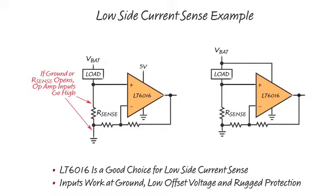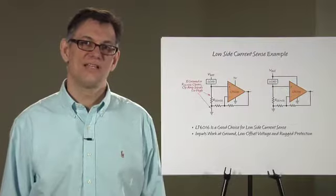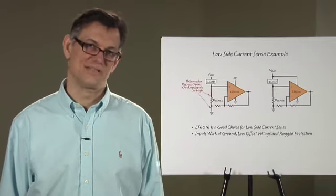The first application example is low side current sensing. This is when you place a small sense resistor between the load and ground and use an op amp to amplify the voltage across the sense resistor, which is proportional to the current that flows through the load. Because the LT6016 op amp inputs operate down to ground with good accuracy and low noise, it is a great amplifier for this kind of application.